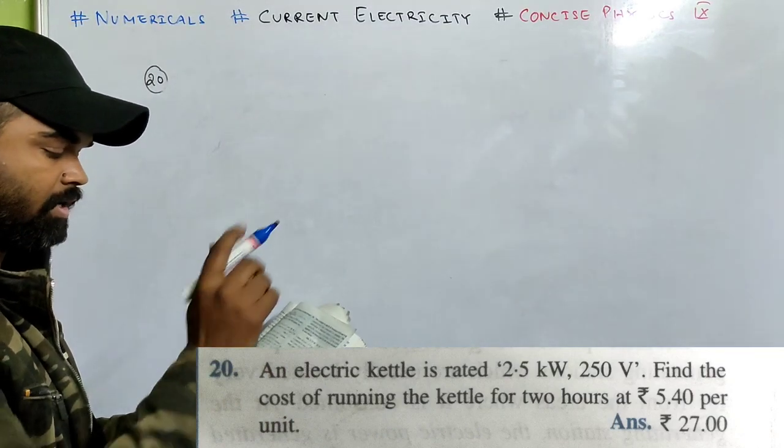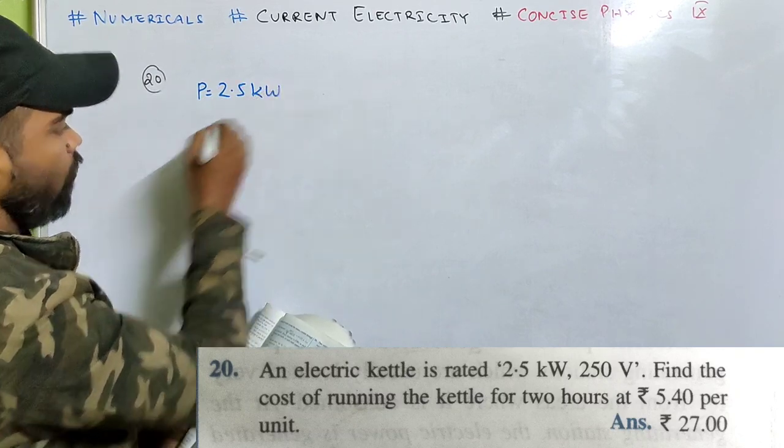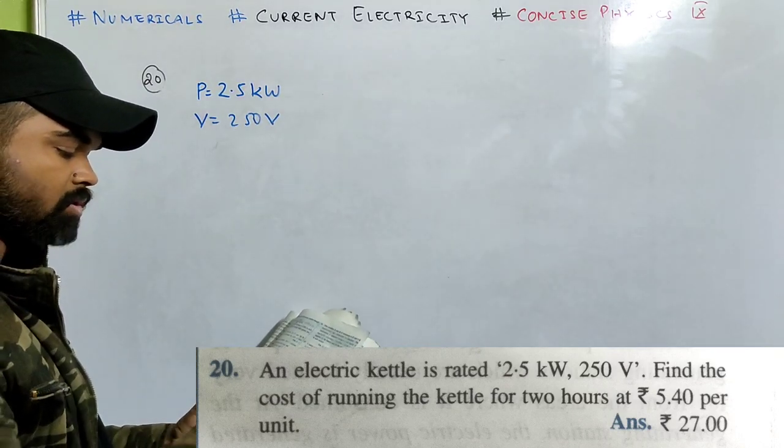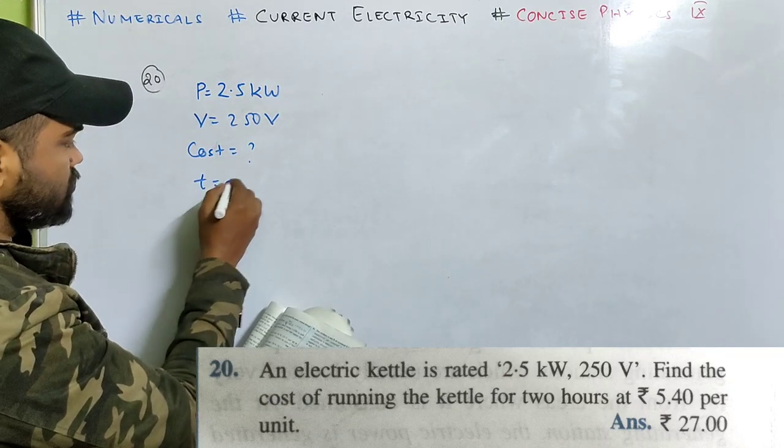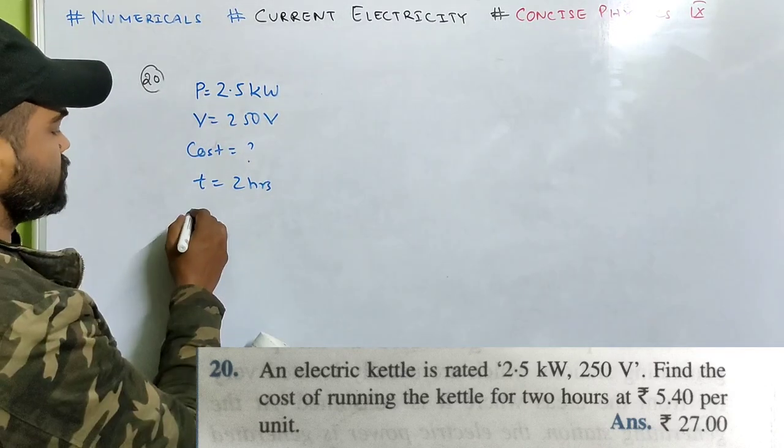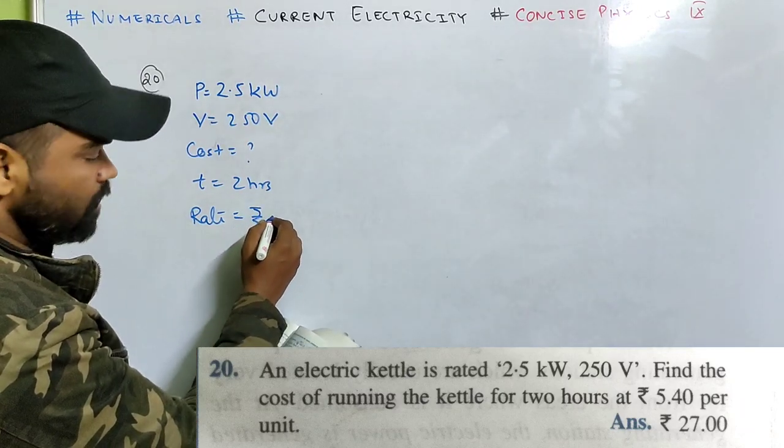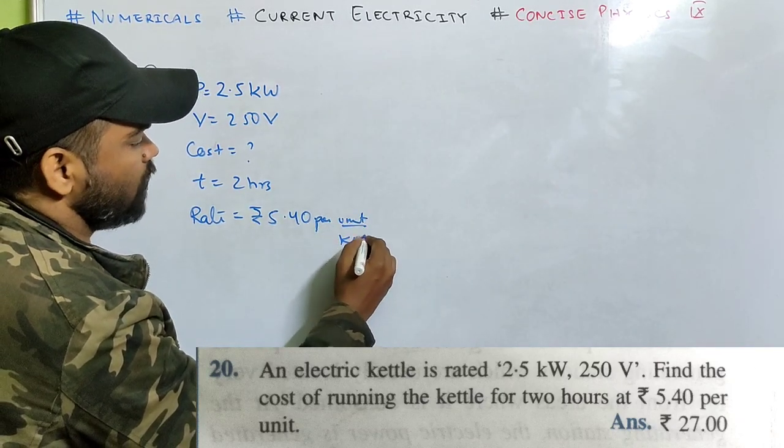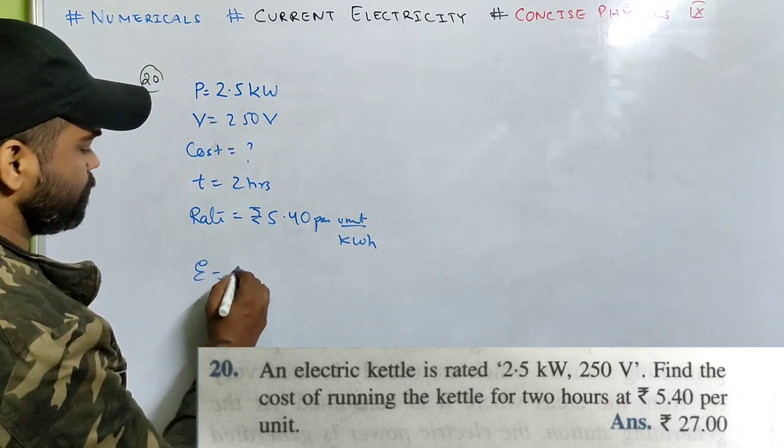Now look at number 20. An electric kettle is rated 2.5 kilowatt and 250 volt. Find the cost of running the electric kettle for 2 hours at rupees 5.40 per unit, which means the rate at which the cost is calculated. We know the unit is kilowatt hour.